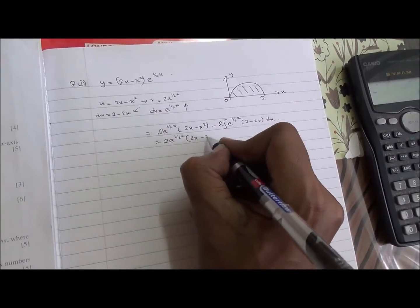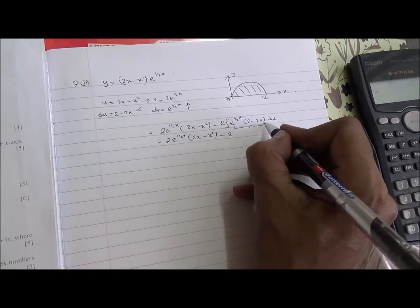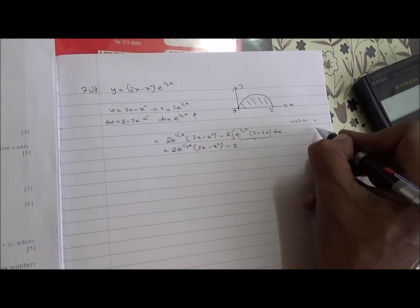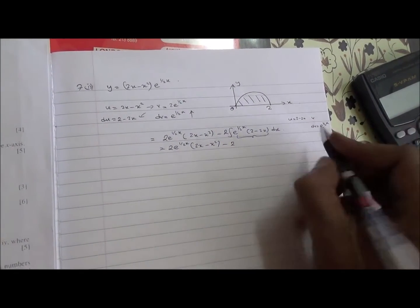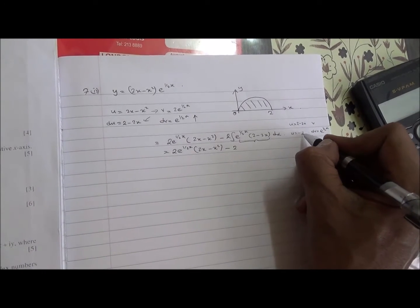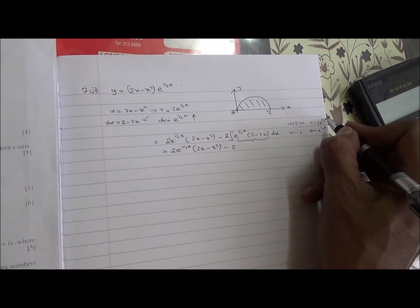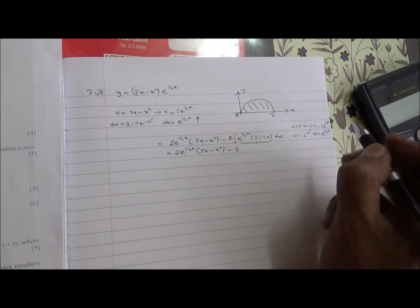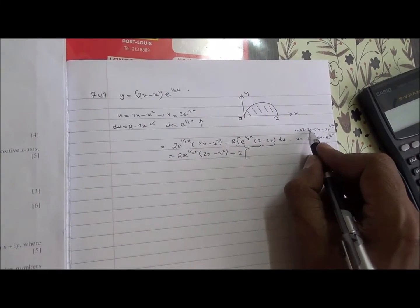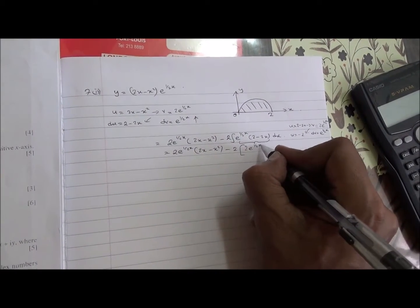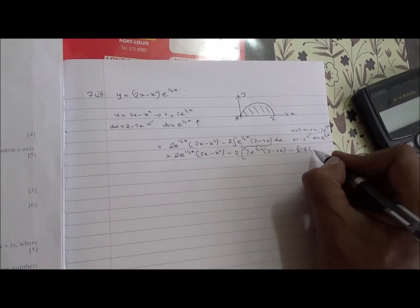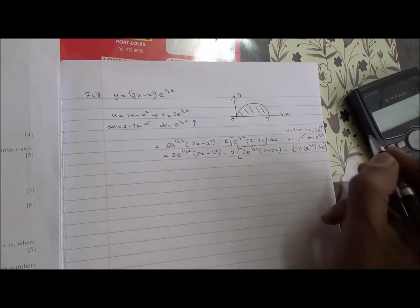We need to integrate this remaining term, which requires another integration by parts. Let u = 2 - 2x and dv = e^(x/2)dx. Differentiating gives du = -2dx, and integrating dv gives v = 2e^(x/2). Applying uv minus the integral of v·du: uv = 2e^(x/2)·(2 - 2x), minus the integral of 2e^(x/2)·(-2)dx.